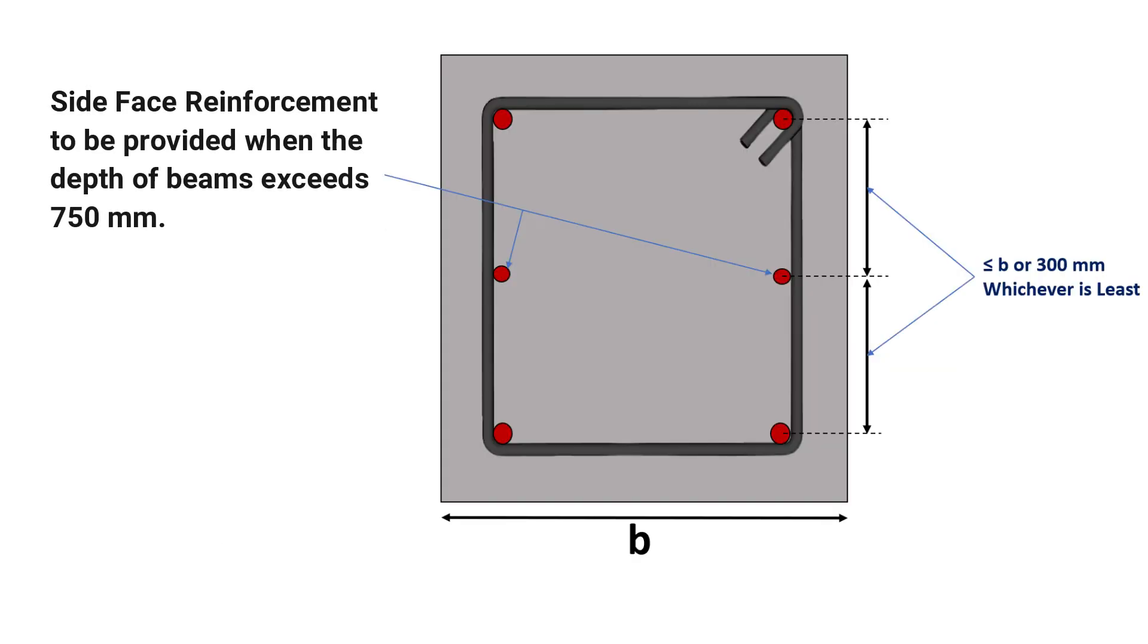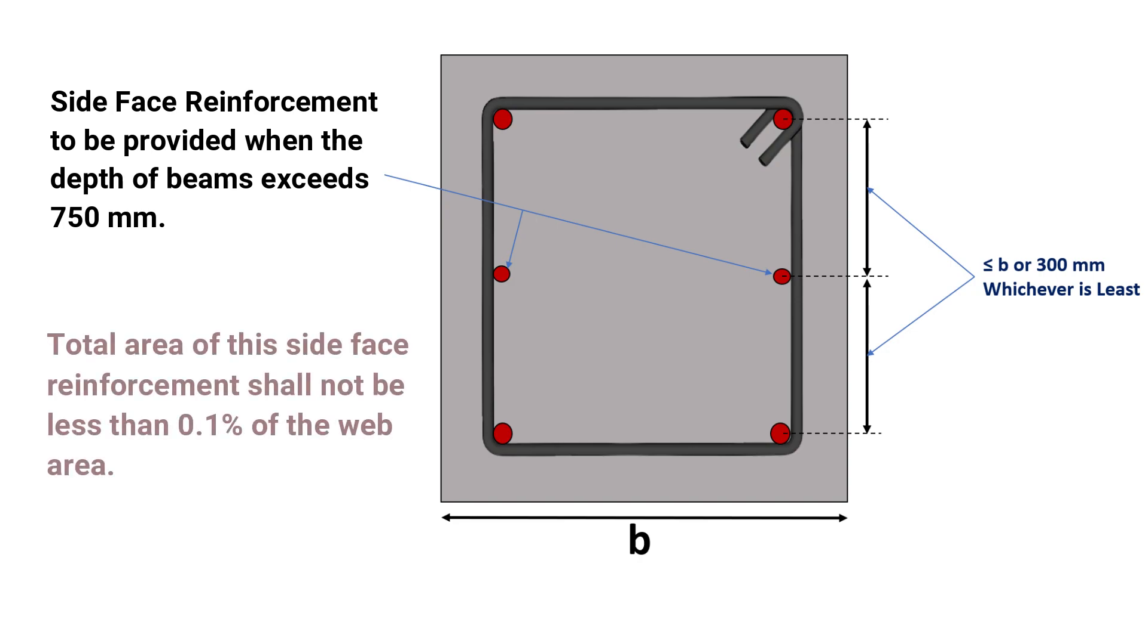When the depth of a beam exceeds 750 mm, then we shall provide side face reinforcement along the two faces of the beam. The total area of this side face reinforcement shall not be less than 0.1% of the web area. It shall be noted that the side face reinforcement shall be distributed equally on two faces and the spacing of side bars shall not exceed 300 mm or the thickness of web, whichever is less.